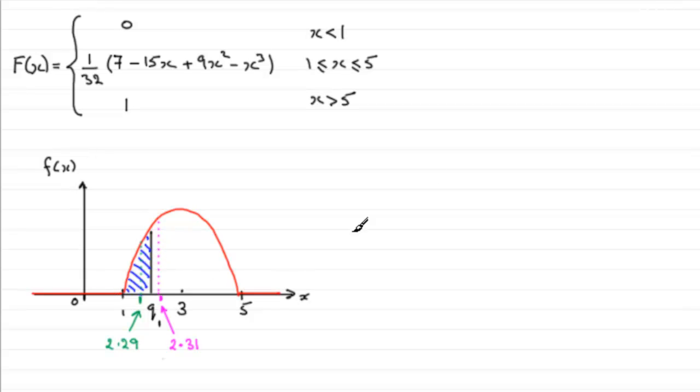So what that means is that we know that that probability, which is given through the cumulative distribution function of f of x, we know that f of Q1, the probability of being less than or equal to it, has got to equal 0.25.